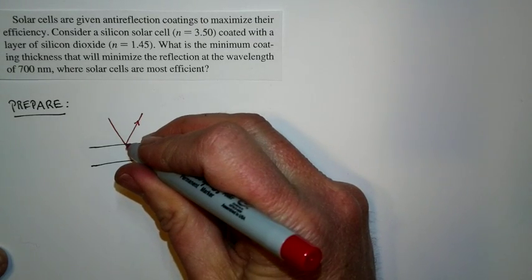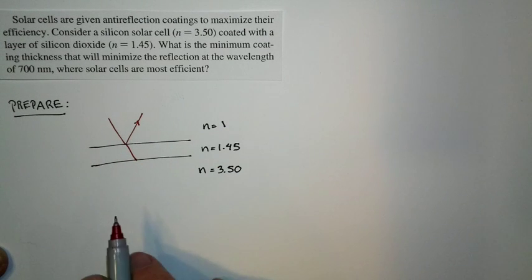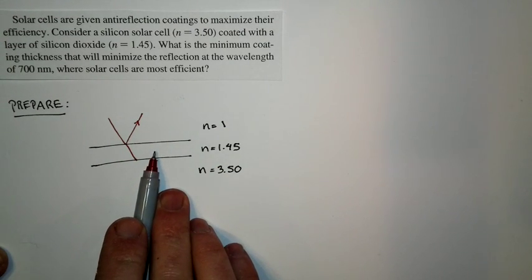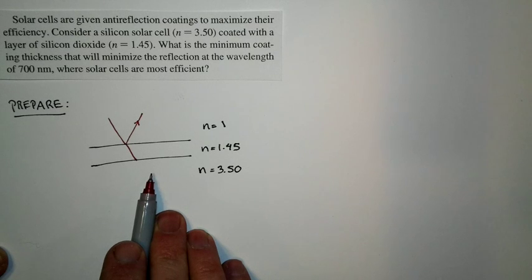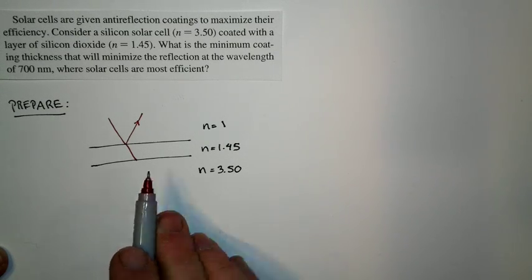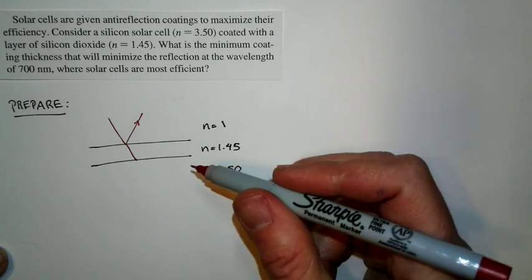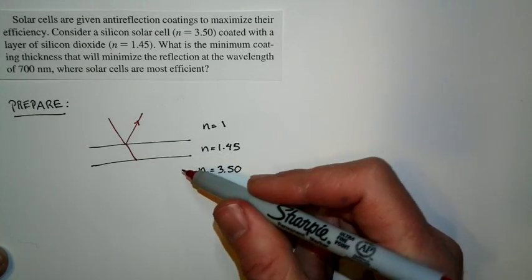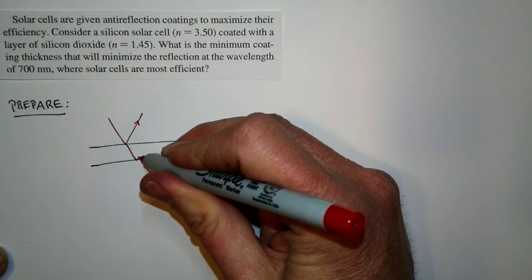But some of the light will continue through the layer, and then it hits this boundary. And that goes from n equals 1.45 of the silicon dioxide to the n equals 3.5 of the silicon. So there'll be a reflection at this boundary as well. Now at this boundary, the index of refraction increases, so there'll be a phase change at this boundary as well.